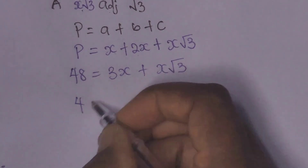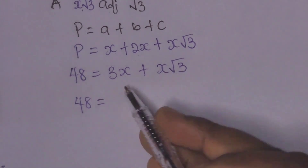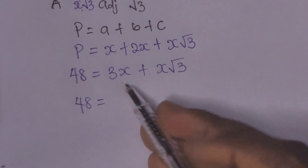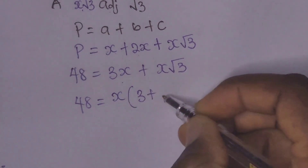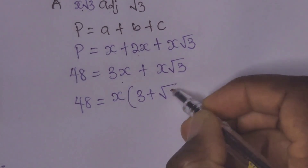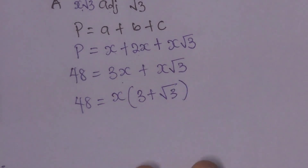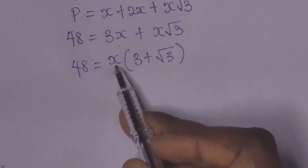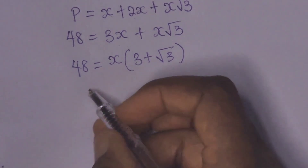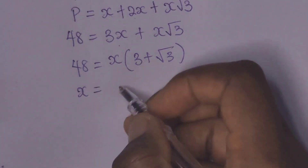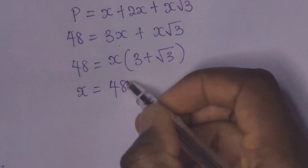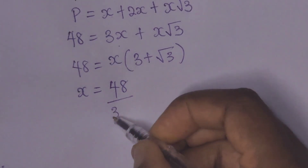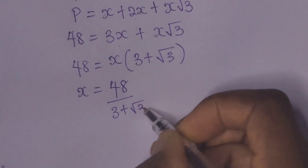So we have 48 equal to, when we factor x out, we have x times (3 plus root 3).